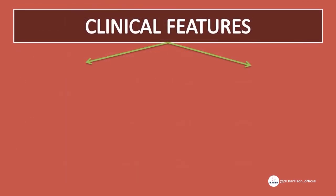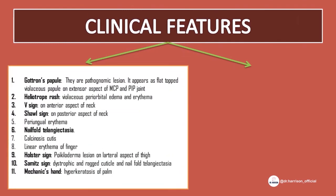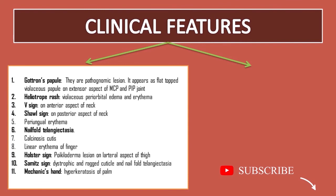Clinical features include skin and muscle involvement. For skin, there are many classical signs. 1. Gottron's papules — these are pathognomonic lesions. They appear as flat-topped violaceous papules over the extensor aspect of the metacarpophalangeal joint and proximal interphalangeal joint. 2. Heliotrope rash — violaceous periorbital edema and erythema.